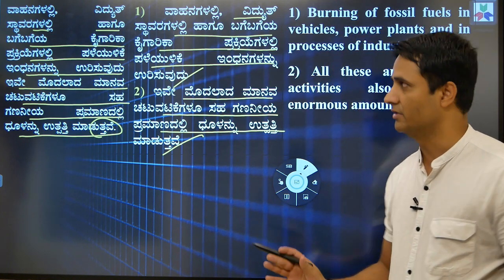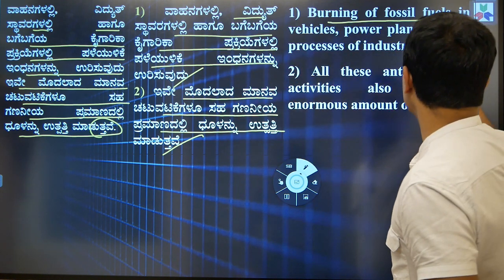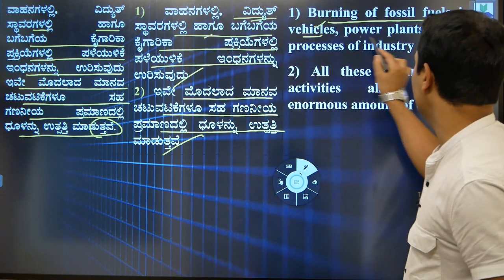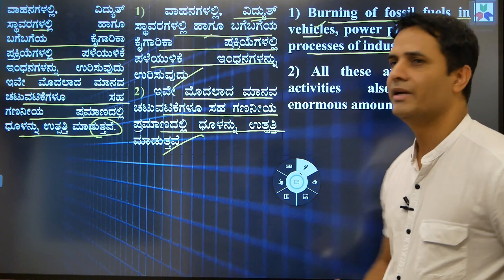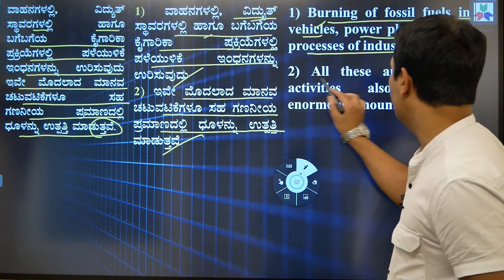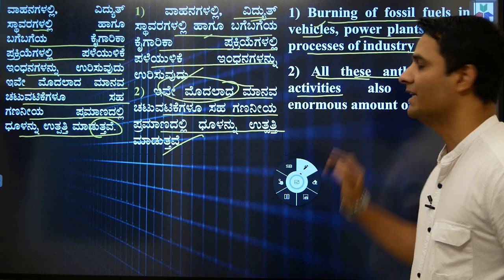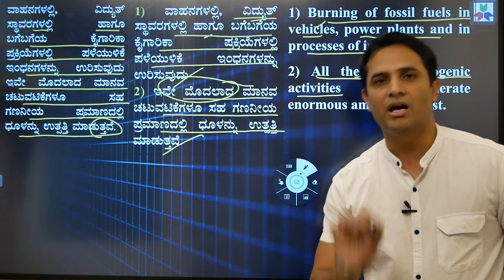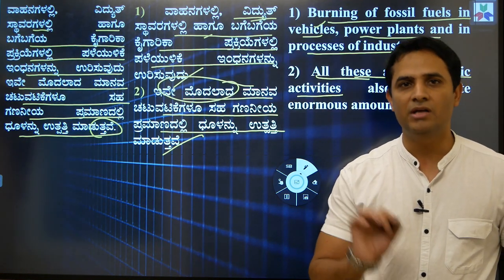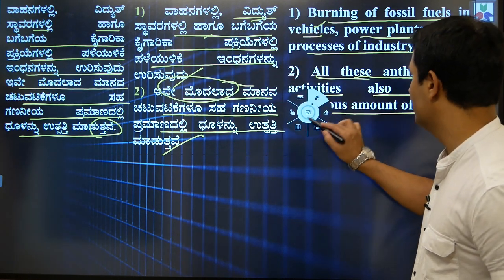Translating fraction one: 'indhanagalannu urisudhu' means 'burning of fossil fuels', 'vahanagalalli' means 'in vehicles', 'viddhustavaragalalli' means 'in power plants', and 'in processes of industry' or 'industrial activities'. Fraction two: 'iwe modalada' means 'all these', 'manavana chettavattikagalu saha' — instead of just 'human activities', 'anthropogenic activities' is more suitable. 'Also generate enormous amount of dust.'